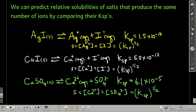And so first, if and only if two salts break apart into the same number of ions, such as these three: silver iodide, copper I iodide, and calcium sulfate, each of these breaks apart into two ions, then we can just look at the KSPs and compare their solubilities. We can say that the one with the smallest KSP will be the least soluble. The one with the largest KSP will be the most soluble.